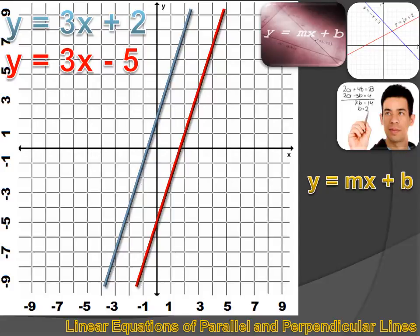We've got two lines here and they are parallel. They look parallel, and we can see that they have the same slope. Lines that have the same slope are parallel. Both of these equations — y equals 3x plus 2 and y equals 3x minus 5 — are in slope-intercept form, where m is the slope. It's 3 in both cases, and b is the y-intercept, which varies between these two lines. That's the difference between them.